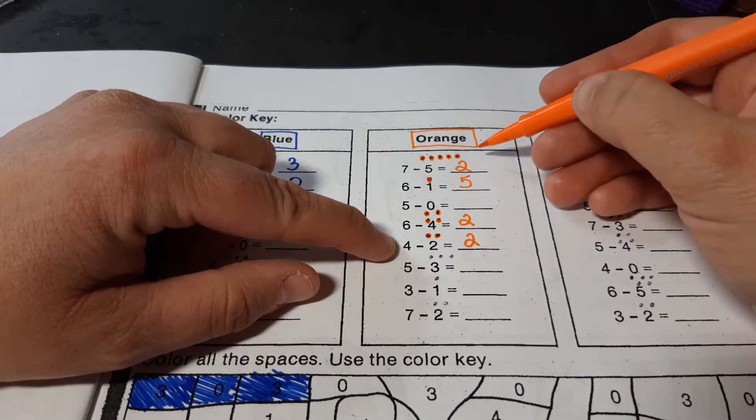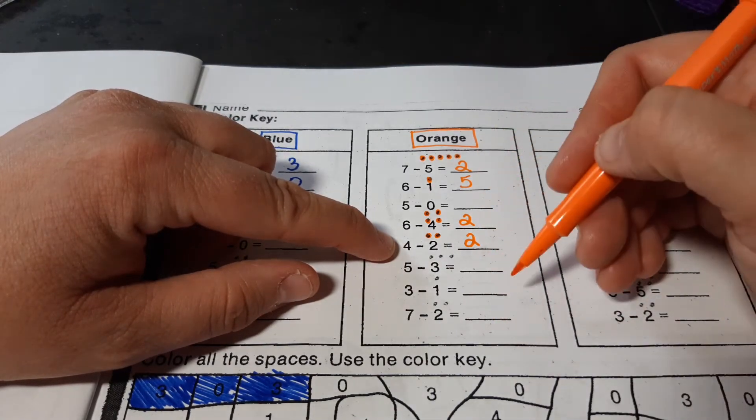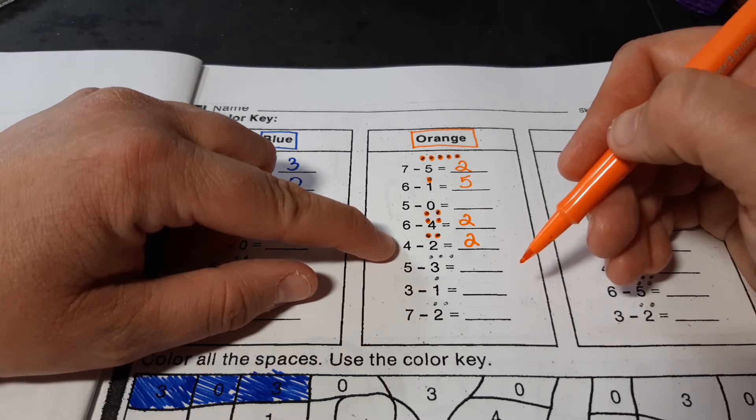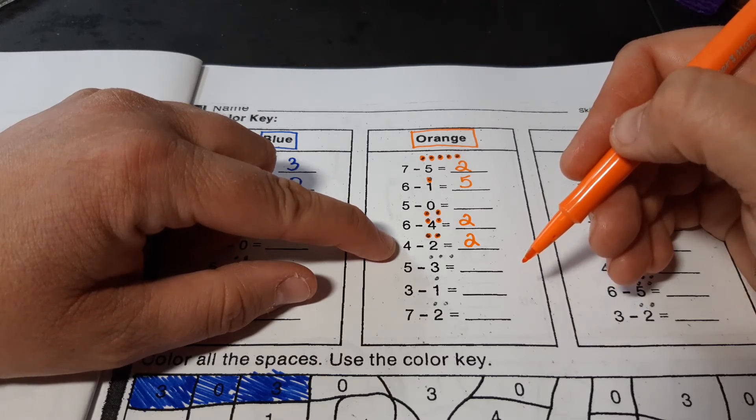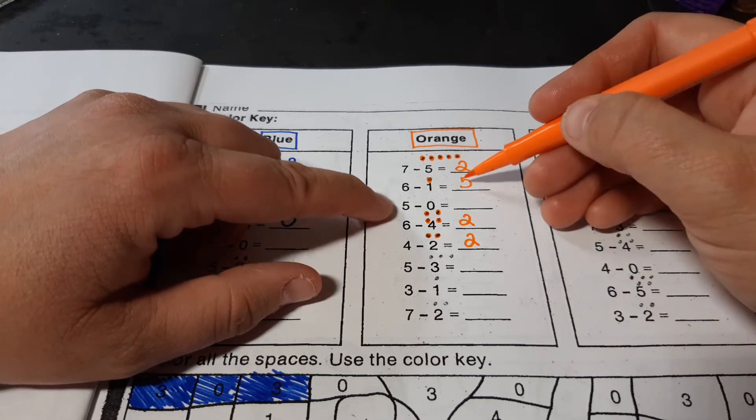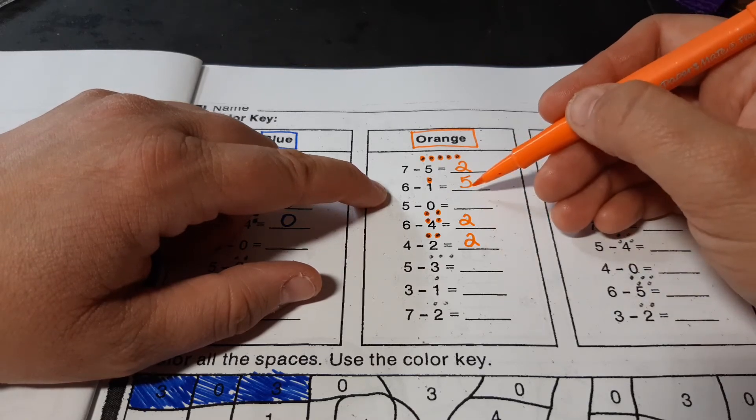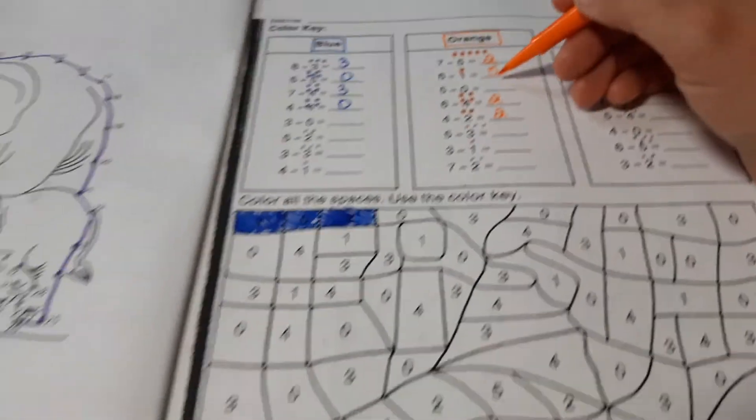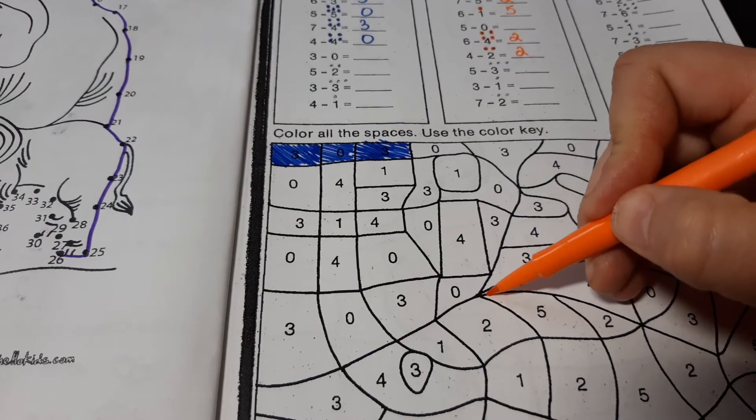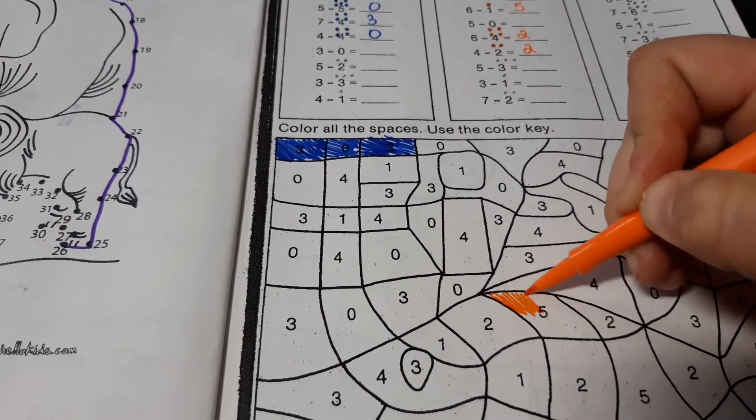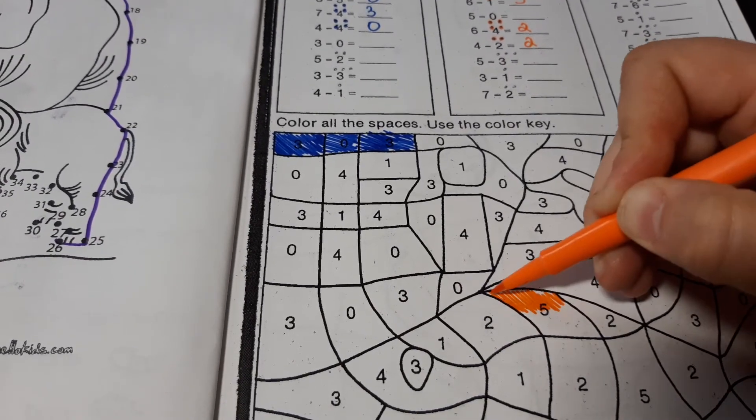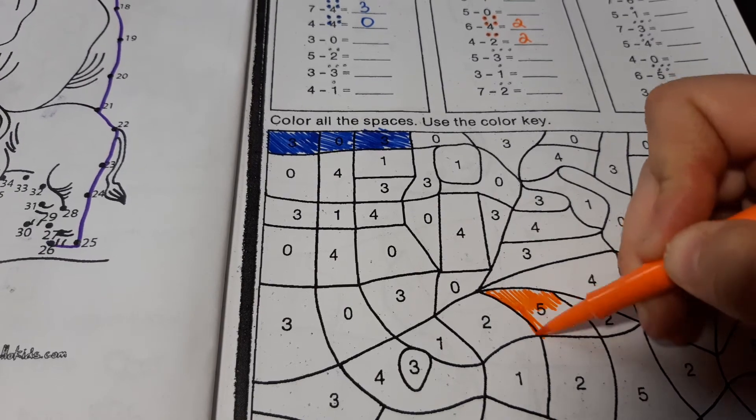Now, when you're all done with the orange category, you can color in the answers that are supposed to be orange. So, here I have a 2 and I have a 5. So, let's see. I'm going to find my 5s. Here's a 5. So, I'm going to color that in orange.